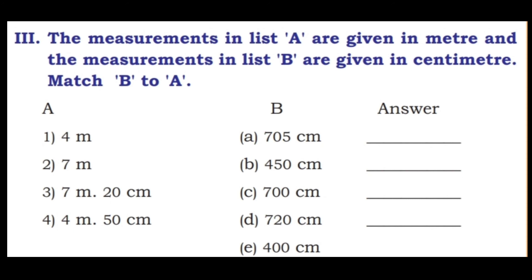Third part: the measurements in list A are given in meter and the measurements in list B are given in centimeter. Match B to A. First: 4 meter matches 400 centimeter. Second: 7 meter matches 700 centimeter — that is C. Third: 7 meter 20 centimeter matches 720 centimeter — that is D.